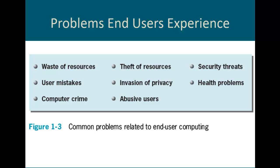User mistakes — users who are careless or not properly trained can easily make mistakes such as inadvertently entering the wrong formula in a spreadsheet so calculations aren't correct. Or maybe someone deletes a program because they have permissions to do so, even though they shouldn't have — that is another user mistake. Computer crime: sometimes computers are used to commit intentional crimes, such as a worker who has access to sensitive company data and tries to profit from the sale of that information.